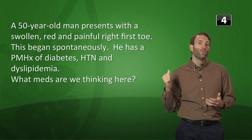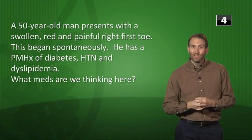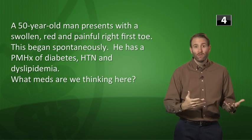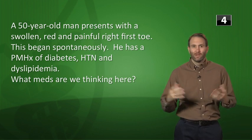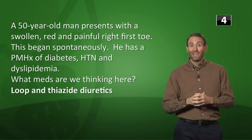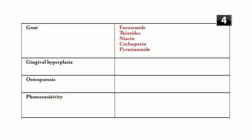Musculoskeletal vignette: a 50-year-old man with diabetes, hypertension, and dyslipidemia presents with a swollen, red, painful right first toe — classic gout. Loop diuretics and thiazide diuretics can exacerbate gout. Niacin (used for low HDL) can also cause gout in addition to flushing. Other gout-exacerbating drugs: cyclosporine and pyrazinamide.